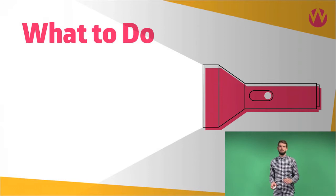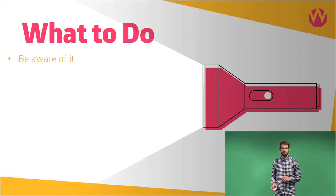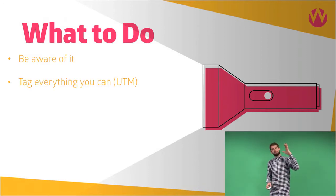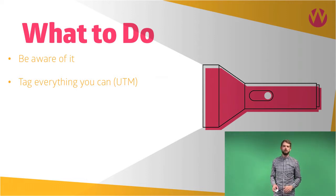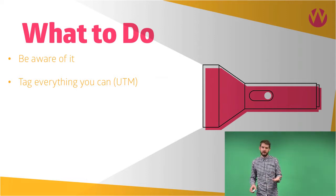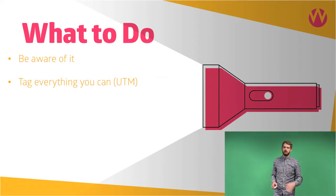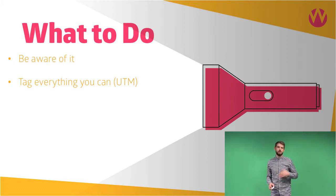So what can you do? Well, the first thing to do is to be aware of it and know that it exists. Secondly, tag absolutely everything you can. If you're running email campaigns, display campaigns, or any kind of social activity, use UTM tracking codes to track it so you can see it in Google Analytics.